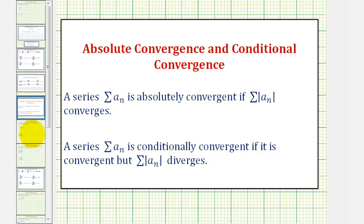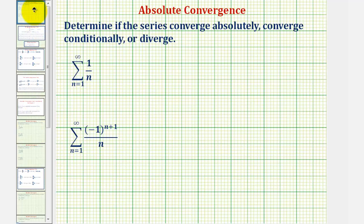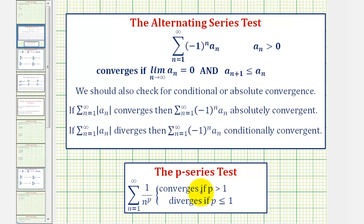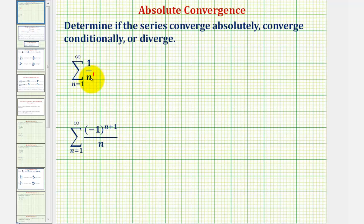Going back to our example, looking at the first series, notice how we have the summation of one divided by n, or one divided by n to the first. If we apply the p-series test, notice if p is greater than one, the series converges. If p is less than or equal to one, the series diverges. Here we have p equals one, and therefore our series diverges.